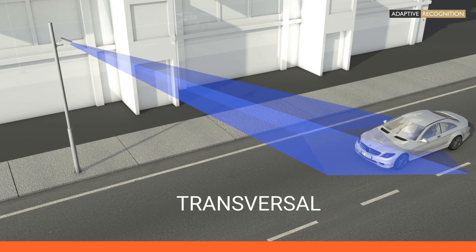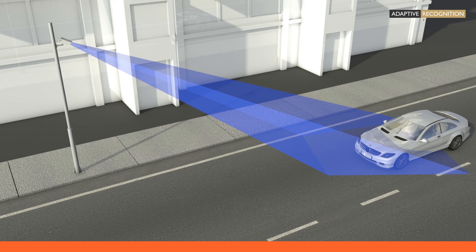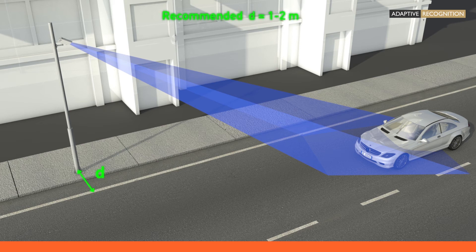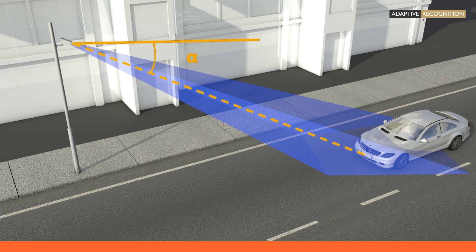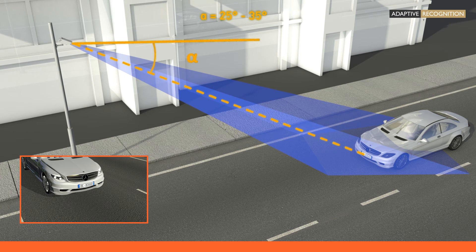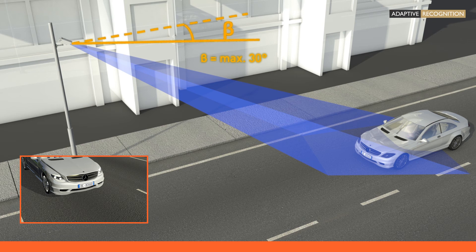The transversal installation is typically used in cities, on roads, motorways, and highways. The typical camera height measured from the road is between 3 and 9 meters. The suggested distance from the roadside is not further than 2 meters. Please make sure that you place the pole far enough away not to be hit by the car's mirrors or any part of it. The vertical rotation angle, so-called tilt, is typically between 25 and 35 degrees — it is important to tilt the camera down enough to crop out the horizon. The horizontal rotation angle, called pan, should be maximum 30 degrees, which ensures the lowest perspectival distortion on the image.